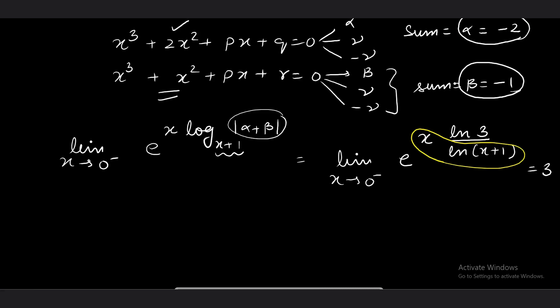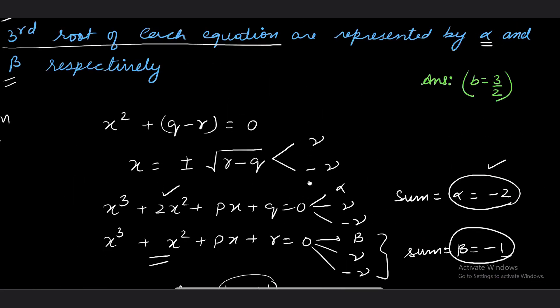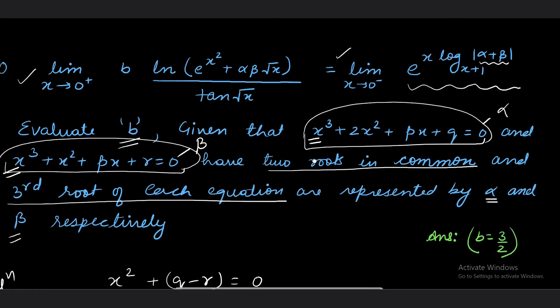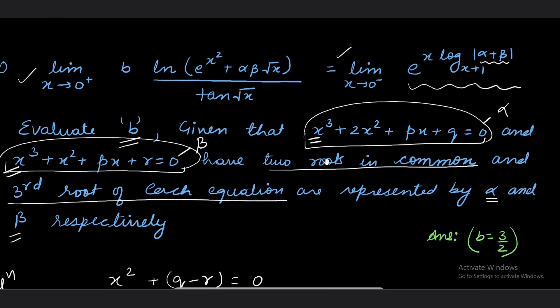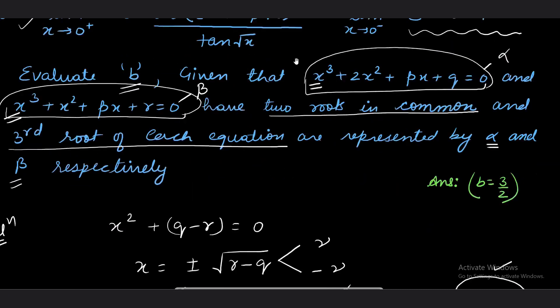For the left-hand limit, as x → 0⁺, we have b multiplied by ln(e^(x²) + α×β√x) / tan√x. Let's see what this becomes. With alpha and beta values, I'll write it as b ln(e^(x²) + 2√x) in the numerator.